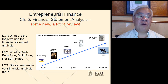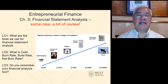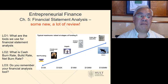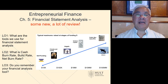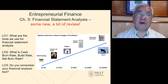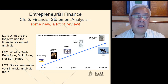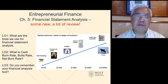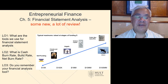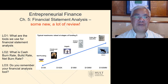So learning objective one: what are the tools we use for financial analysis? Number two: what are cash burn rate, build rate, net burn rate, and the related measure of runway? And third: do you remember your financial analysis and how to use ratios? We're going to do a refresher right now.